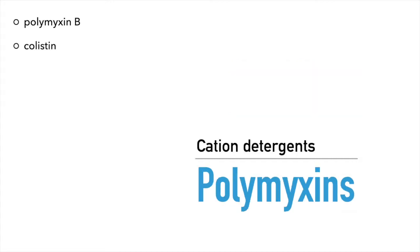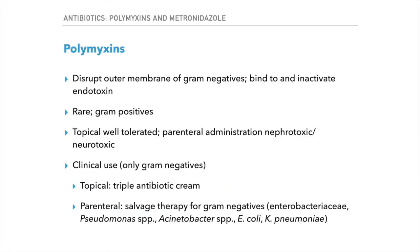Let's first start by looking at the polymyxins. These are cationic detergents, and there's really only two drugs here: polymyxin B and colistin. A lot of people will refer to colistin as polymyxin E. The polymyxins have a unique mechanism of action in that they disrupt the outer membrane of gram-negatives, which allows intracellular components of the bacteria to leak out, leading to bacterial cell death.